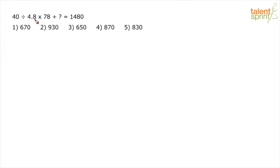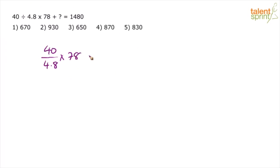The problem is: 40 divided by 4.8, into 78, plus question mark equals 1480. Let us write it properly — 40 divided by 4.8 into 78, plus what will give you 1480 is the question mark.